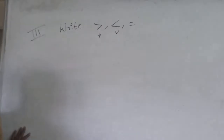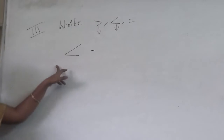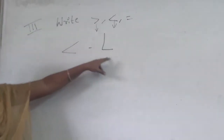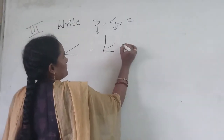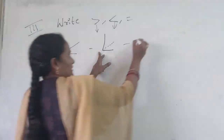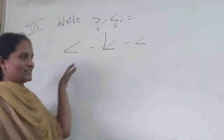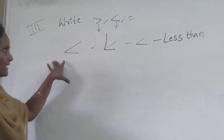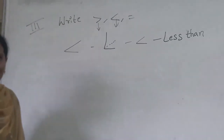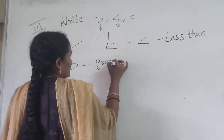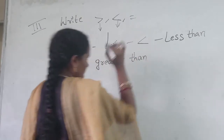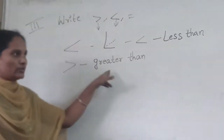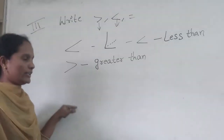Now I will give you a trick. What is this symbol? This symbol looks like the letter L in the English alphabet. L for 'less than.' So L stands for less than. There are only two symbols: one is less than, and the other one is greater than.